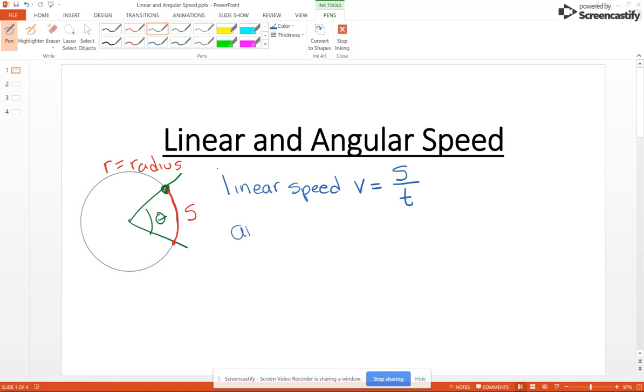Now the angular speed, angular speed, it's denoted with the Greek lowercase letter omega, looks like a W, it's going to be the angle formed by the object theta over that same time period T. Now it's important to remember that this theta is in radians, it must be in radians.